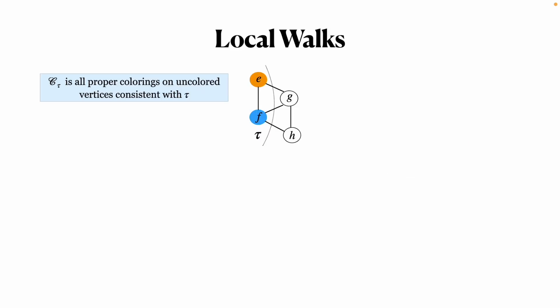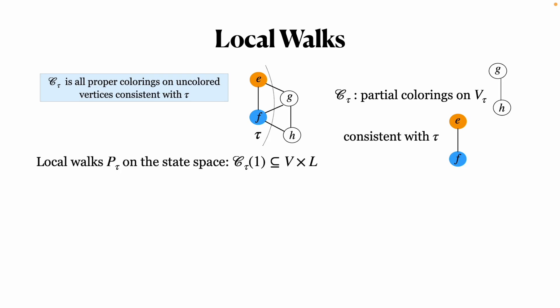We also define local walks on the space of partial colorings after pinning certain elements. For example, we fix the partial coloring τ on E and F, and then we explore the space Cτ, which is the partial coloring on remaining vertices G and H. At the same time, ensuring the consistency with the pinned coloring on E and F.